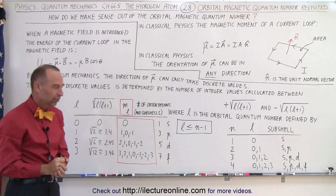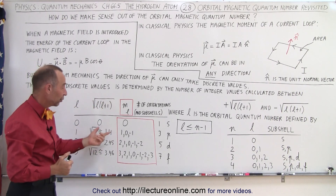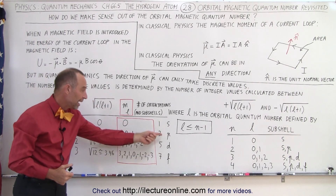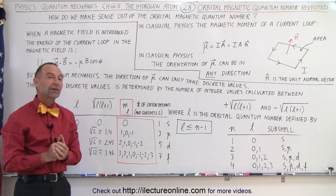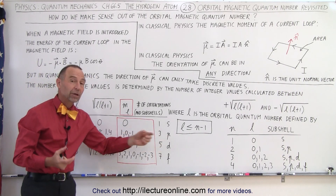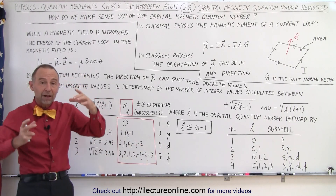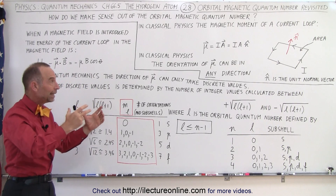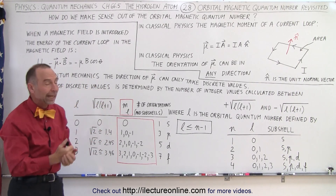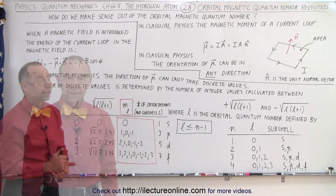These values are associated with the possible subshells in the various energy levels. That's why there are three P subshells — because there are three possible orientations — and five D subshells, because there are five possible orientations for the magnetic moment. And that's what we mean by the orbital magnetic quantum number.